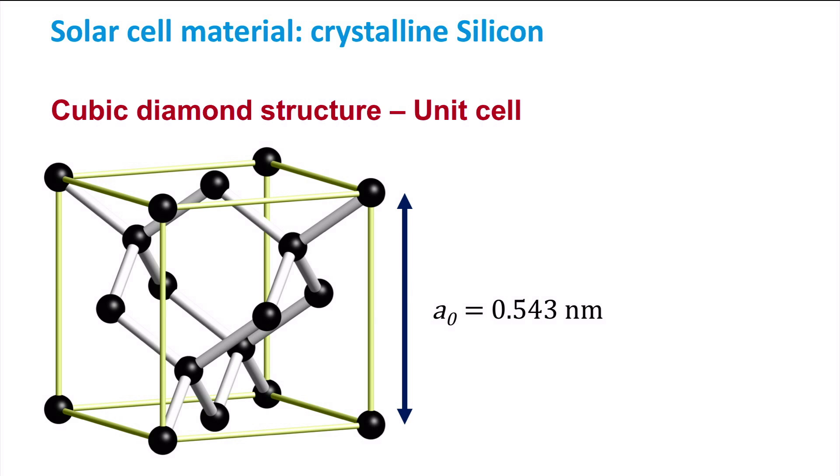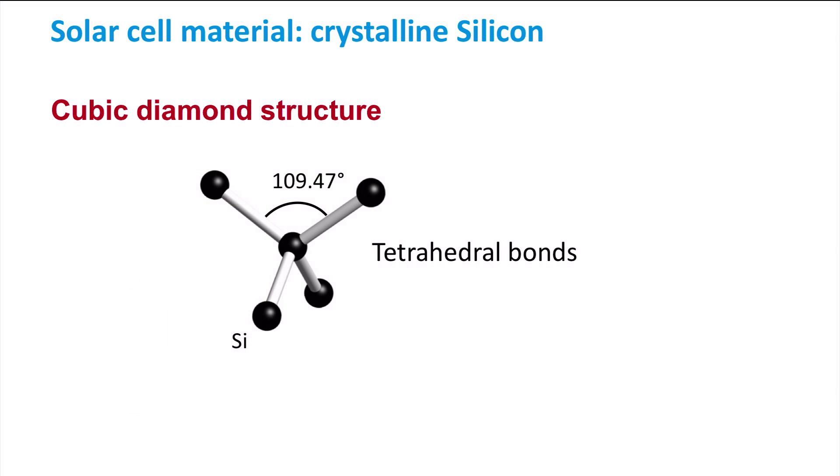The lattice spacing of crystalline silicon is 0.543 nm. When focusing on one silicon atom we see that the covalent bonds of this atom with 4 other silicon atoms form a tetrahedral structure with a bond angle of 109.47 degrees.